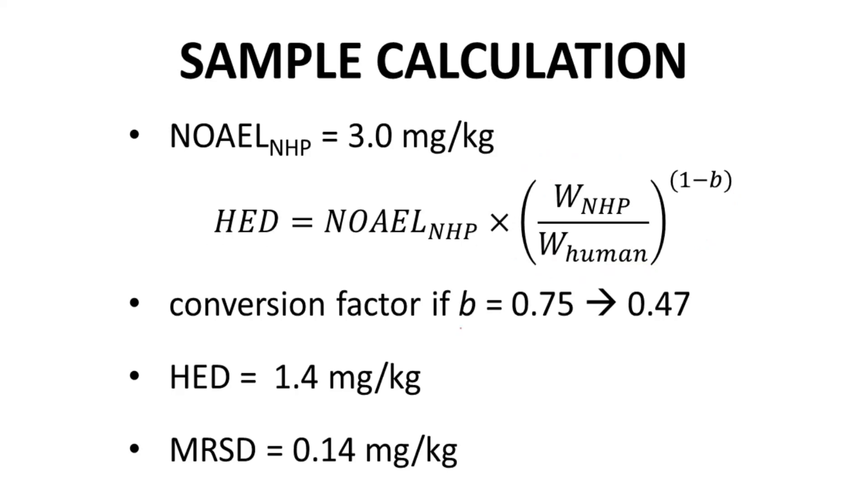For NHP and a B value of 0.75, the conversion factor is 0.47. That gives an HED of 1.4 mg per kg. Division by 10 for the safety factor gives an MRSD of 0.14 mg per kg.